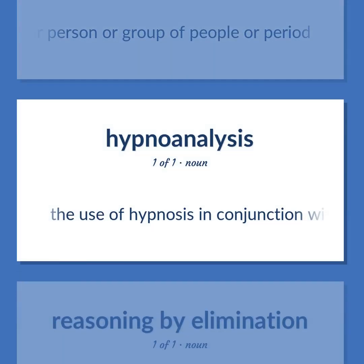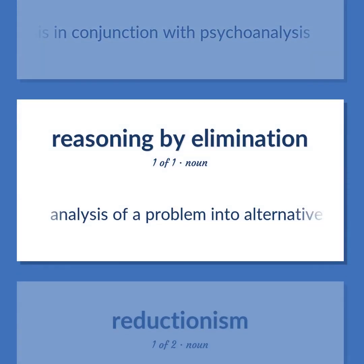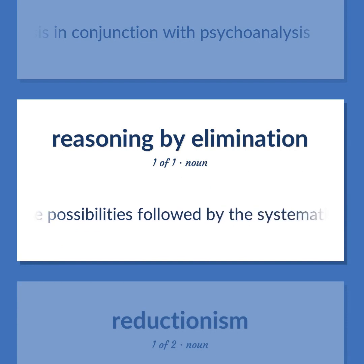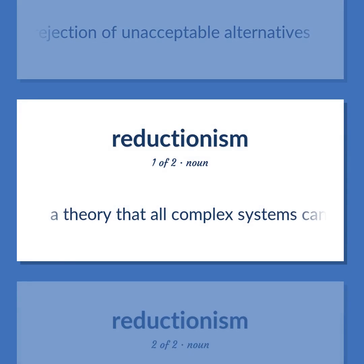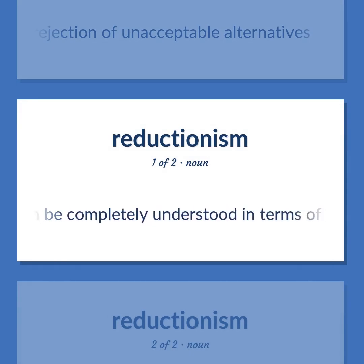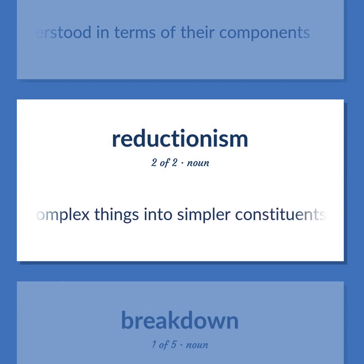Hypnoanalysis: The use of hypnosis in conjunction with psychoanalysis. Disjunctive analysis: Analysis of a problem into alternative possibilities followed by the systematic rejection of unacceptable alternatives. Reductionism: A theory that all complex systems can be completely understood in terms of their components. Reduction: The analysis of complex things into simpler constituents.